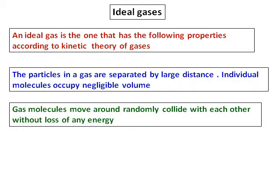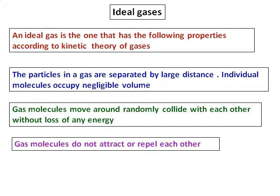The second one is gas molecules move around randomly, collide with each other without the loss of any energy. That means when they collide each other, they do not lose any energy. And the third one is they do not attract or repel each other. So these are the basics of ideal gases, and we have to check whether all these things are really true.